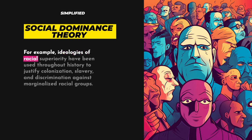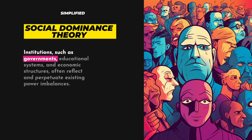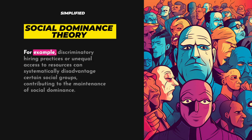For example, ideologies of racial superiority have been used throughout history to justify colonization, slavery, and discrimination against marginalized racial groups. SDT also considers the role of institutional practices and social policies in reinforcing and perpetuating social hierarchies. Institutions such as governments, educational systems, and economic structures often reflect and perpetuate existing power imbalances. For example, discriminatory hiring practices or unequal access to resources can systematically disadvantage certain social groups, contributing to the maintenance of social dominance.